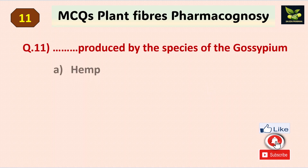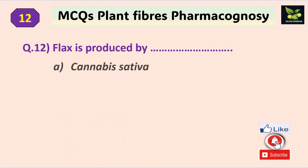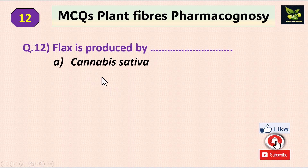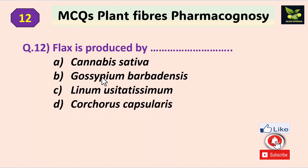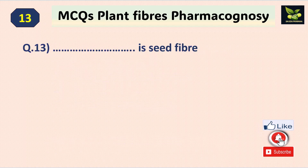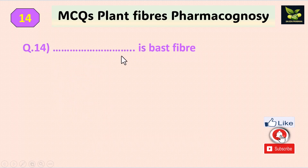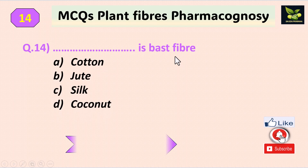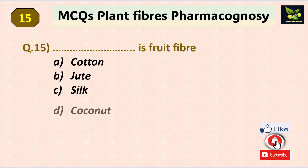Question ten: which fiber is produced by the species of Gossypium? The answer is cotton. Question eleven: what is the biological source of flax? Options are Cannabis sativa, Gossypium barbadensis, Linum usitatissimum, or Corcorus capsularis. The answer is Linum usitatissimum. Question twelve: which is a seed fiber? The answer is cotton. Question thirteen: which is a bast fiber? The answer is jute. Question fourteen: which is a fruit fiber? The answer is coconut.